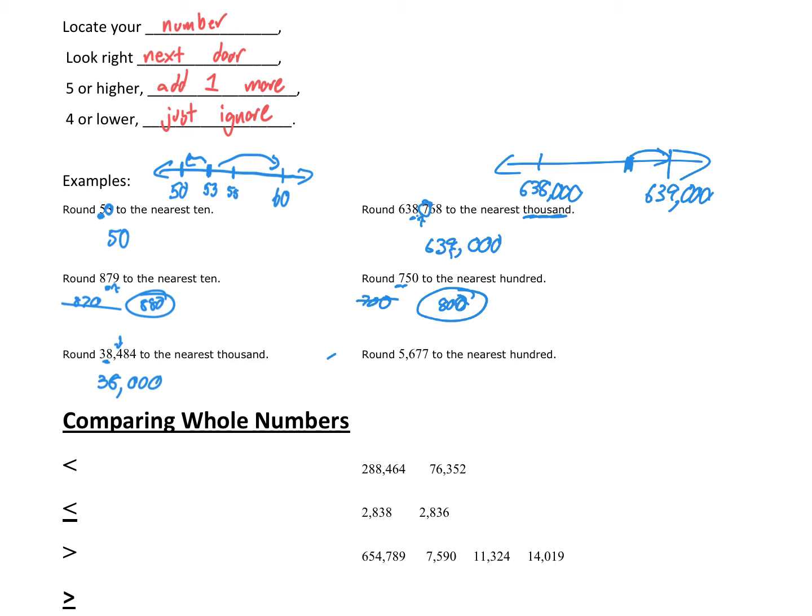Round 5,677 to the nearest hundred. So locate the number. The six is in my hundreds place. Look right next door to the seven. The seven is the boss, you may have learned. So it makes the six go up higher. 5,700. That is how we round whole numbers.